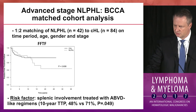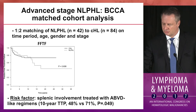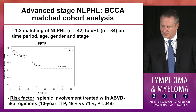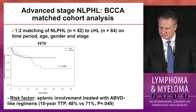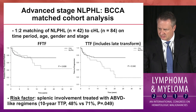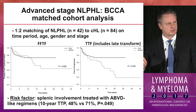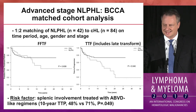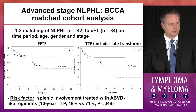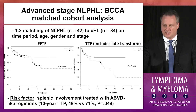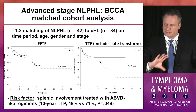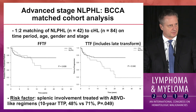For advanced stage disease — a minority, only about 20% of patients — a matching study from British Columbia's retrospective database showed freedom from treatment failure lines were not statistically significantly different between NLPHL and classical Hodgkin's. The only reason FFTF appeared slightly worse for LP is that there were late transformations. When looking at overall survival, it does not look drastically different for LP versus classical Hodgkin's.